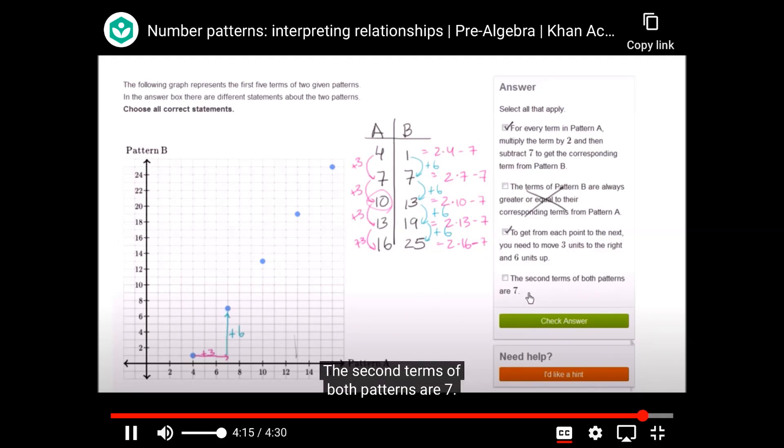The second terms of both patterns are 7. We see that right over here. The second terms are 7. We have 7 here and we have 7 there. And so that is right as well. So the only one that doesn't apply is this second one. This is not right.